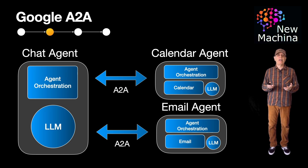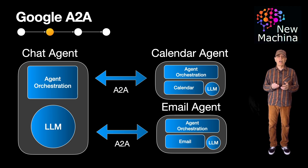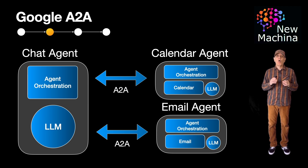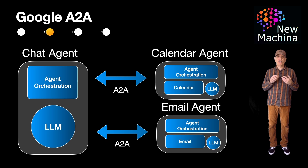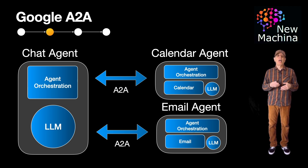So how does this work technically? A to A uses simple structured messages, usually in JSON, for communication. Each agent shares what tasks it can handle, what kind of information it needs, and what it gives back to other agents asking for its services. This setup makes it much easier to plug agents into a larger system that controls the flow of work.